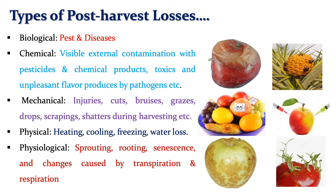Physiological losses include sprouting, rooting, senescence, or changes caused by transpiration and respiration. For example, greening of potatoes during storage. Loss of moisture contributes to wilting or shrinkage of fruits and vegetables. Loss of stored energy such as carbohydrates, loss of other constituents like vitamins, and physical losses due to pest and disease attacks are all included in post-harvest losses. It is the most important role of post-harvest technology to reduce these losses.